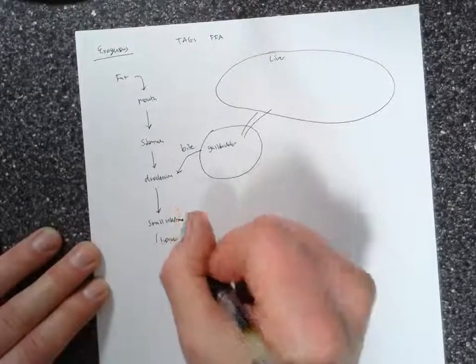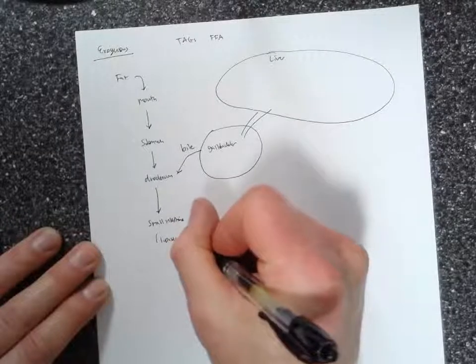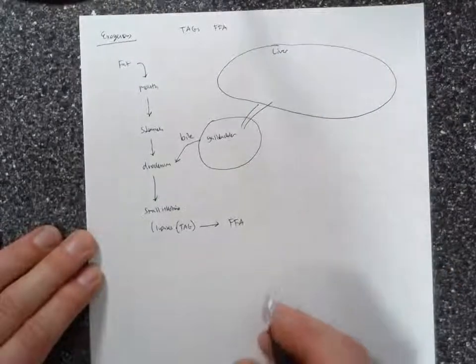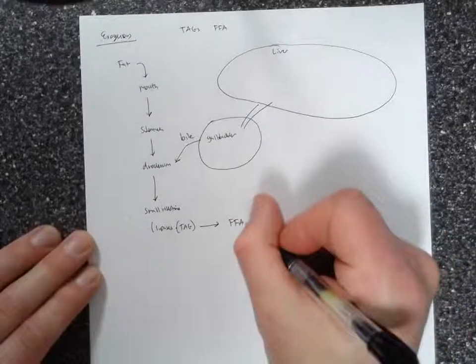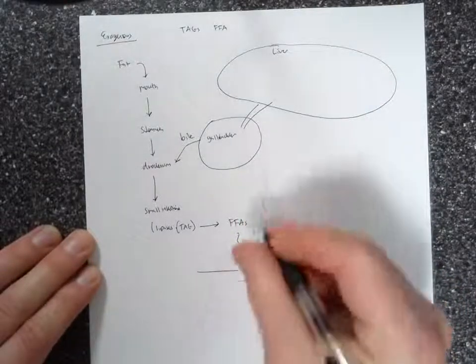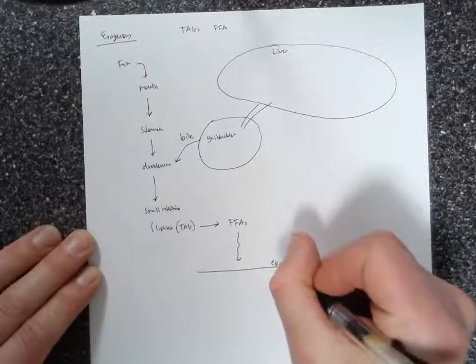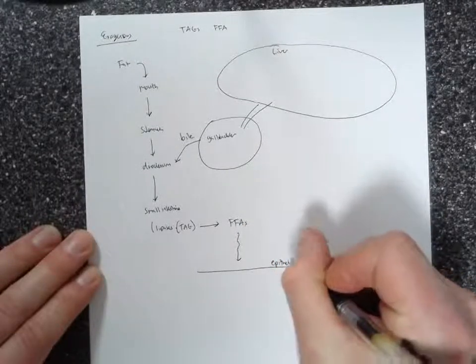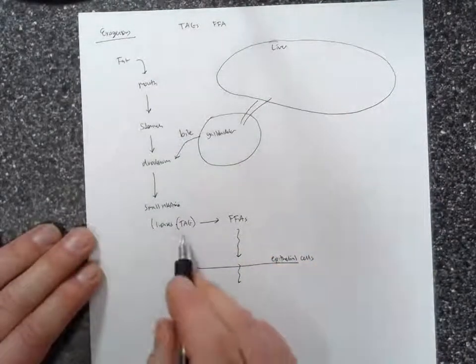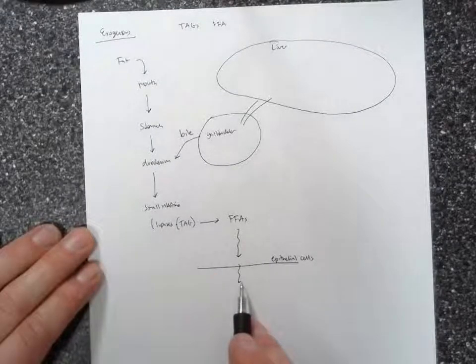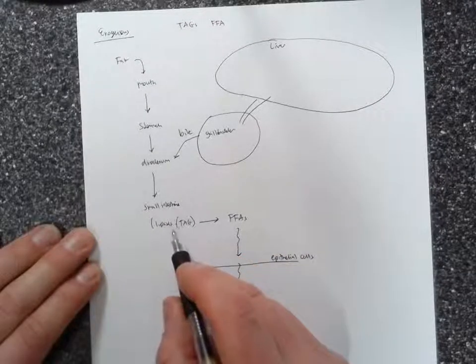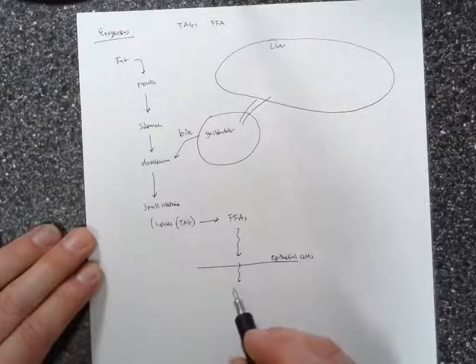So lipases are going to break down these triacylglycerols into free fatty acids. And then the free fatty acids are actually going to diffuse across an epithelial cell in the intestine. So they're going to make their way across because triacylglycerols aren't going to be able to make it all the way through. They're just too bulky. But when the fatty acids are chewed up by the lipases in the small intestine, they can make it across the epithelial cell.